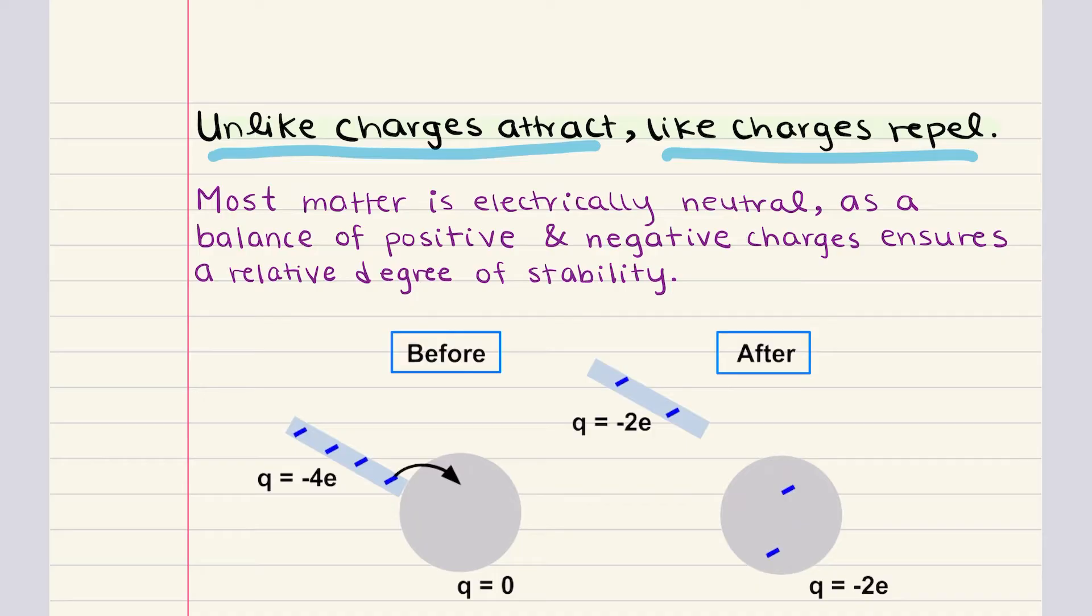Historically, the assignment of charges as positive and negative was introduced by Benjamin Franklin. And although the choice of names was arbitrary, what matters is how these charges interact. When a positive and a negative charge come together, they can cancel each other out, behaving algebraically to neutralize one another.